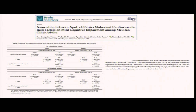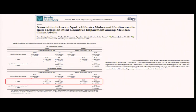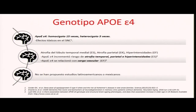En un estudio previo, en esta misma cohorte de pacientes, no pudimos demostrar la asociación entre el estado de portador y los subtipos de deterioro cognitivo leve. Pero encontramos que los pacientes con el genotipo Epsilon IV en su forma heterocigota u homocigota presentaban riesgo, en conjunto con factores de riesgo cardiovascular, de tener deterioro cognitivo leve. El estado portador confiere en su forma heterocigota de tres a cinco veces más riesgo, comparado con la forma homocigota que representa hasta 15 veces mayor riesgo.